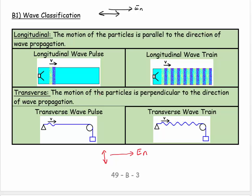In seismology they refer to these as primary and secondary waves because they have different speeds — typically a longitudinal wave is faster and a transverse wave is slower. If you know the speeds of these two waves you can measure how far apart they arrive in time, and from that work out how far away the disturbance that caused them was. That's the basis of how they know where earthquakes take place.